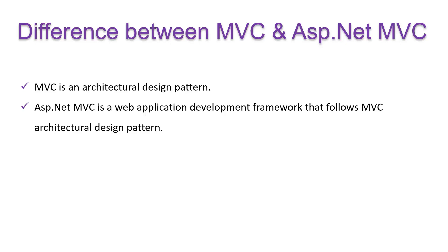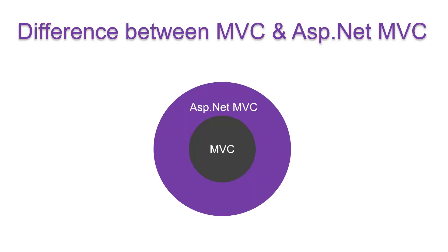This means ASP.NET MVC is written on top of MVC, and hence ASP.NET MVC uses all the key concepts of the MVC framework. As you can see here, first we have the MVC framework, and on top of MVC we have created a new framework which is ASP.NET MVC. So this is the main difference between MVC and ASP.NET MVC — they are not equal; they are different entities.